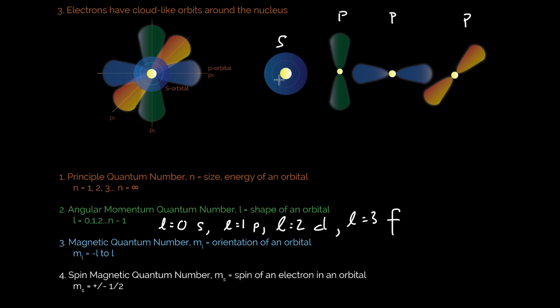And we actually describe that mathematically with the magnetic quantum number, which is number three. And that's going to be m sub l. And that is simply the orientation of an orbital. And that number range will always go from negative l to l.